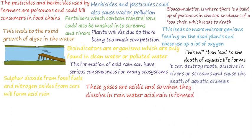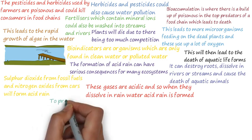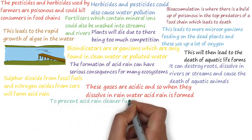Acid rain can cause the death of many plants and organisms. It can destroy roots, dissolve into rivers or streams and cause the death of aquatic animals. If the pH of rivers becomes too acidic, then the river may not be able to support any form of life.